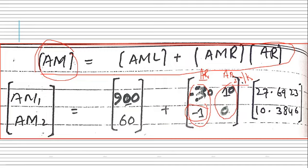To summarize: we have solved a beam and now a portal frame using the flexibility method. In the next lecture, we will solve 3D indeterminate structures, such as 3D frames or 3D grids. An assignment will also be given, and students are encouraged to submit on time, as assignments are an important part of learning. Thank you very much, and I hope you understood this lecture.